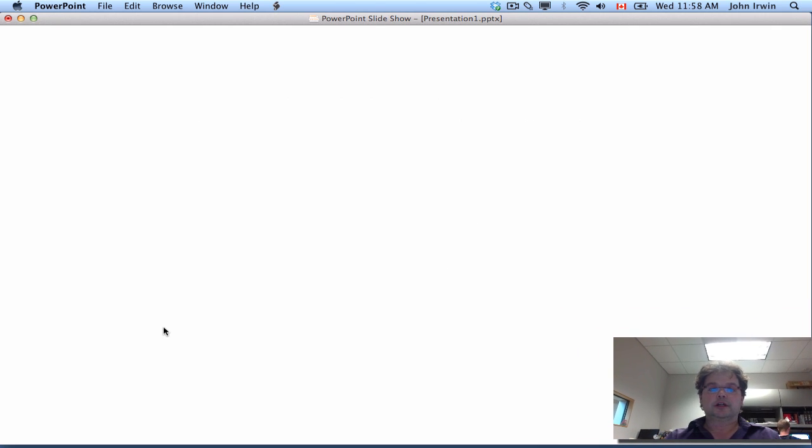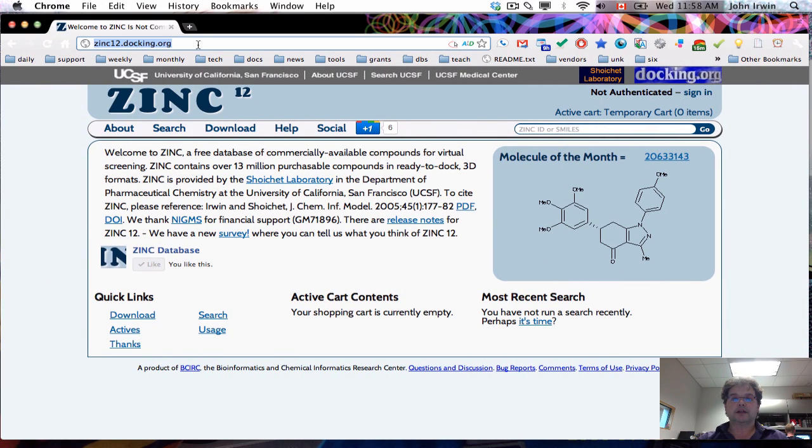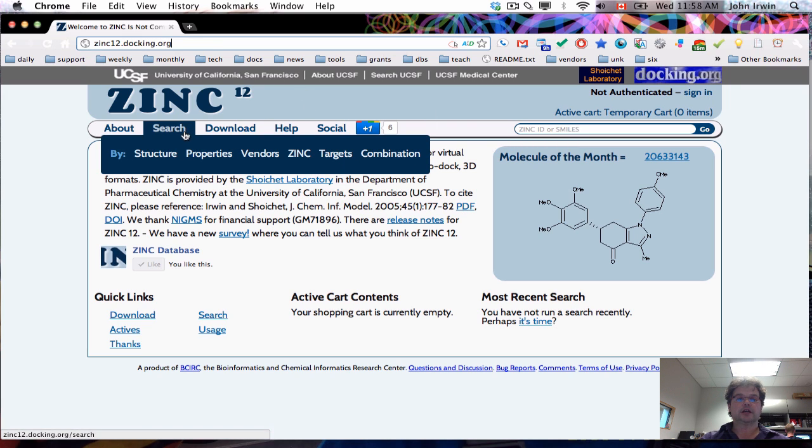So let's get started. We'll go to the ZINC website, currently in beta at zinc12.docking.org and you can see it's got a new layout. We're going to start with going to search, and of course you can search by the usual things - structure, properties, vendors - but today we're going to search by target.